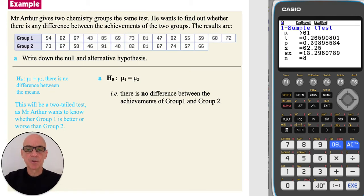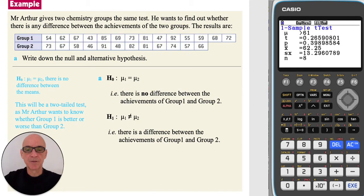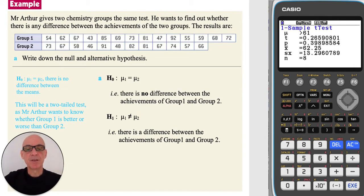As Mr. Arthur wants to know whether Group 1 is either better or worse than Group 2, this will be a two-tailed test. The alternative hypothesis H1 is that the population means are different — i.e., there is a difference between the achievements of Group 1 and Group 2.